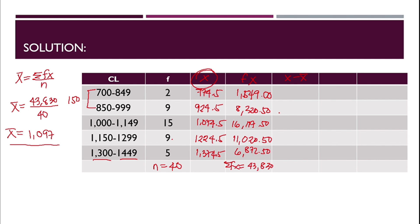Computing x minus the mean: 774.5 minus 1097 equals negative 322.5; 924.5 minus 1097 equals negative 172.5; 1074.5 minus 1097 equals negative 22.5; 1224.5 minus 1097 equals 127.5; and 1374.5 minus 1097 equals 277.5.